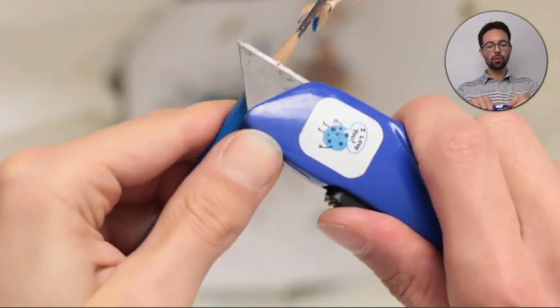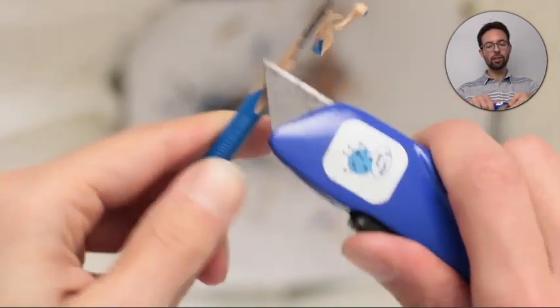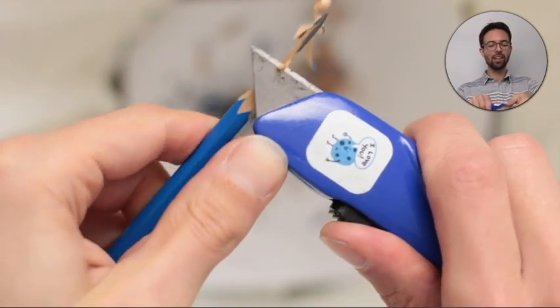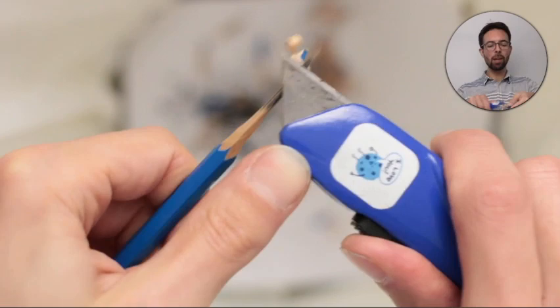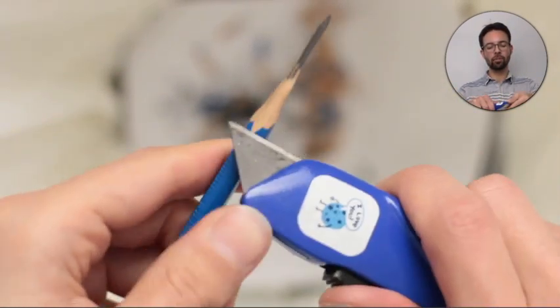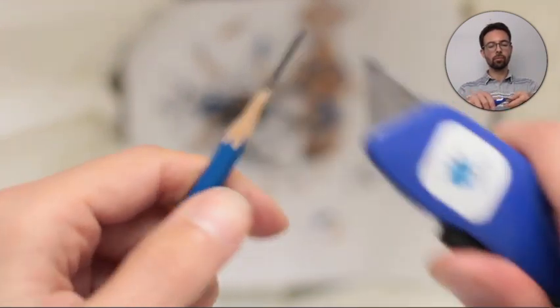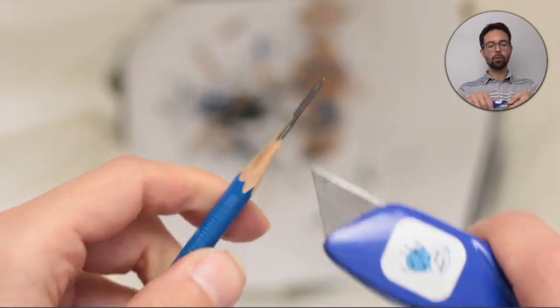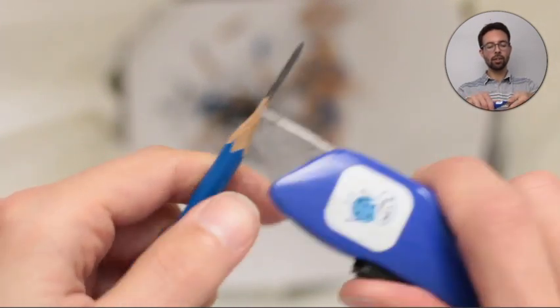And so two benefits of having a ninja pencil, a long point like this, are that number one, you can see past your pencil and actually see what you're doing on the drawing. With a regular point, there's a lot of wood in the way. But if you're exposing the lead like this, then you can actually see better what you're doing.